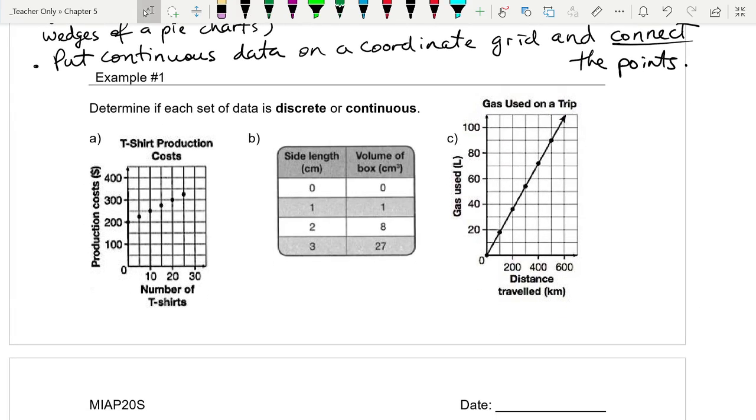So take a second. Do you see this as discrete or continuous? Well, I guess the easiest one is probably C, because they connected the dots with a line, so therefore it is definitely continuous. According to this graph, they measured the distance traveled every 100 kilometers. But there's nothing stopping them from stopping at 210.753 kilometers. There are numbers between those dots that exist. That's what makes it continuous data.